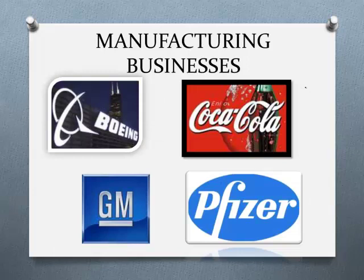The last type is manufacturing. They take raw materials, make them into a totally different product, and sell it. Coca-Cola takes water, sugar, and secret ingredients to make a new product. General Motors takes tires, seats, metal, and paint to make cars. Pfizer takes chemicals and makes pharmaceuticals. Boeing takes raw materials and makes airplanes — an entirely new product.